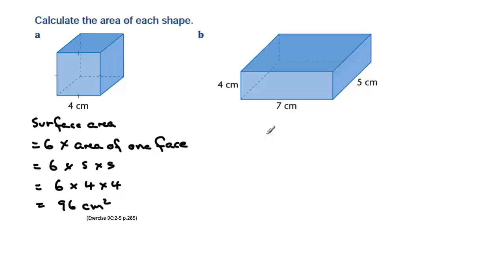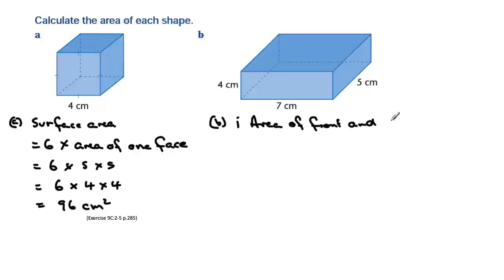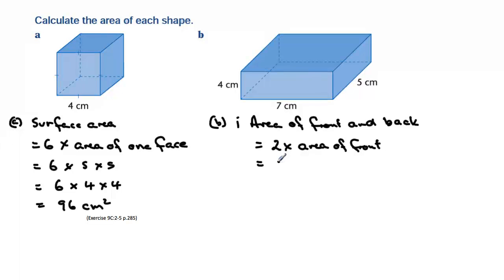Here's an example of something you do have to break up a little bit. We'll mark this in as A and this in as B, and be very careful how we do this. First, let's work out the area of the front and back. The area of the front and back is equal to two times the area of the front, because they're identical — that's two times length times width, which is seven by four, giving a total of 56 centimetres squared. So that's two out of the six faces covered.